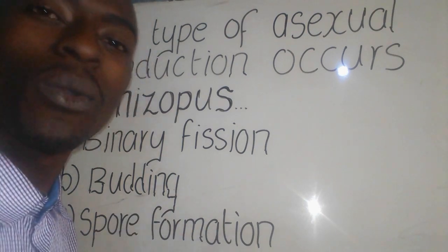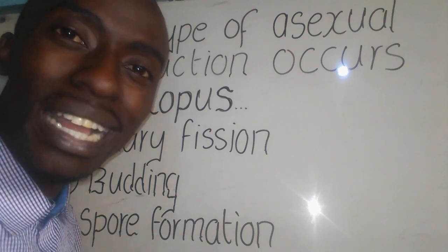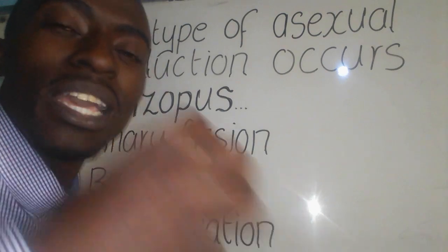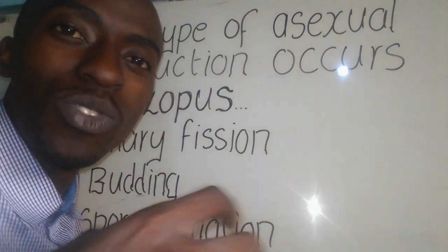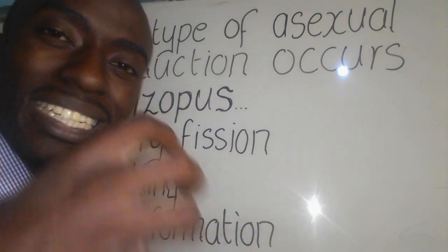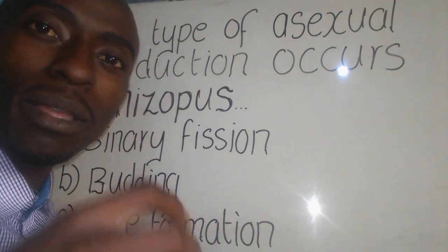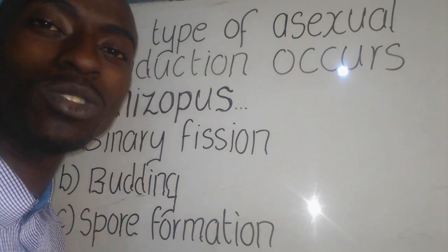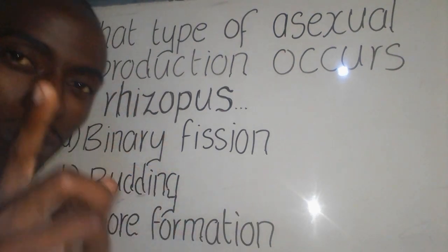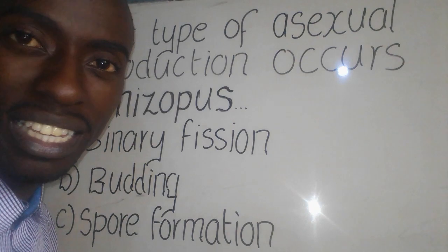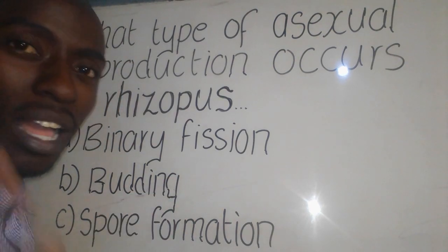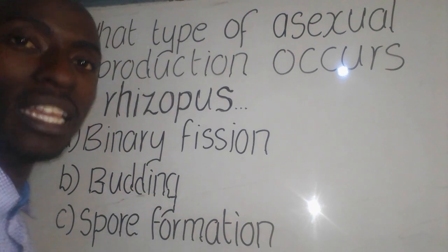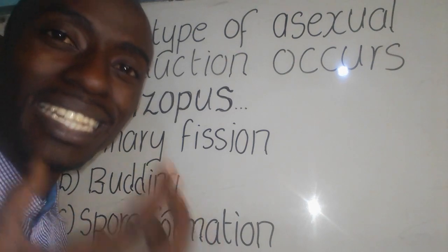Budding is a type of asexual reproduction where an organism develops an outgrowth which will eventually grow and detach itself from the parent organism to become an independent organism. This is mostly seen in yeast, so this option is also not the answer.